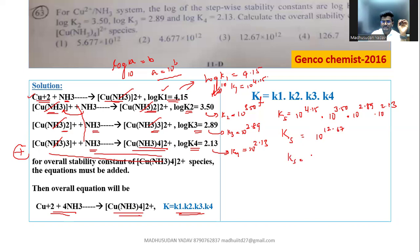So now this can be written as 10 power 12 into 10 power 0.67. Can I write like this? Yes.